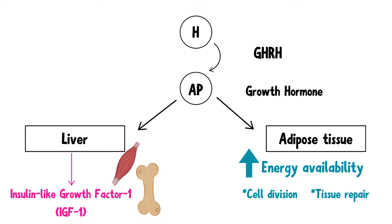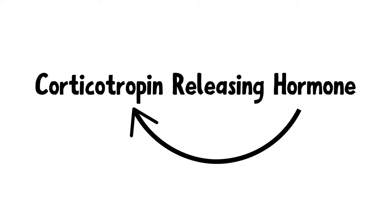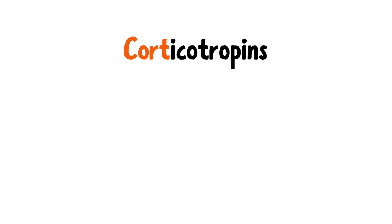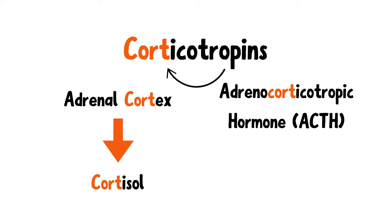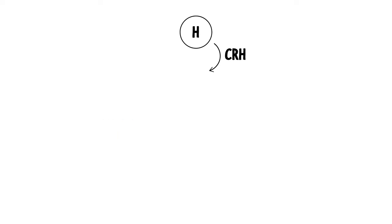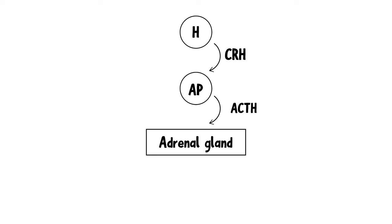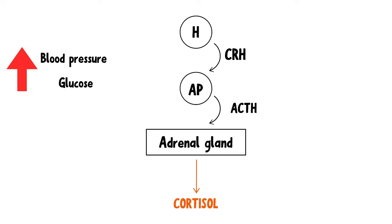Now let's move on to CRH, also known as corticotropin-releasing hormone — a hormone that releases corticotropins. Corticotropins are hormones like adrenocorticotropic hormone that stimulate the cortex of the adrenal gland to produce cortisol. CRH is produced in the hypothalamus and stimulates the anterior pituitary gland to secrete ACTH. ACTH acts on the adrenal cortex and stimulates it to release cortisol. Cortisol is our body's stress hormone — it increases blood glucose and blood pressure to cope with stress.